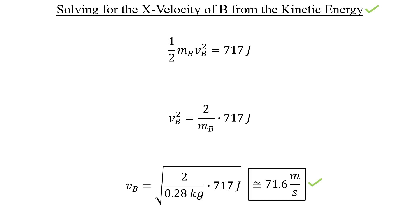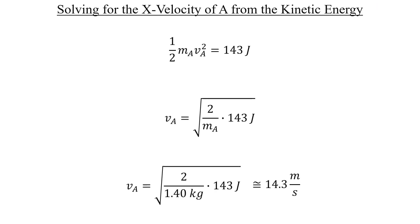It's the exact same process for A, except with different values. As you might expect, the larger mass has a much smaller share of the energy and thus only reaches a speed of about 14.3 meters per second. And with those two speeds known, we're now done with part A.